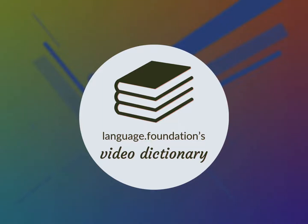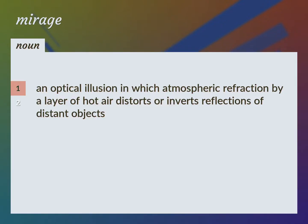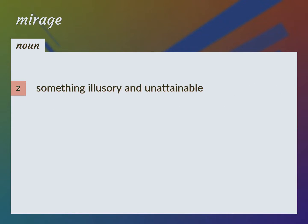Language.Foundation's Video Dictionary, helping you achieve understanding. An optical illusion in which atmospheric refraction by a layer of hot air distorts or inverts reflections of distant objects. Something illusory and unattainable.